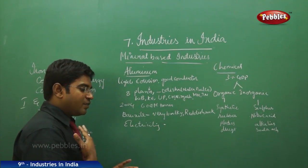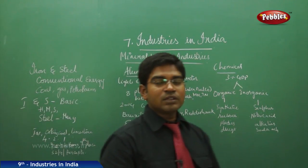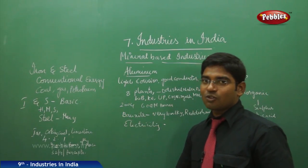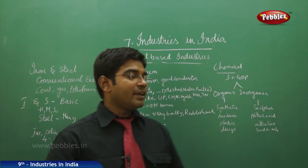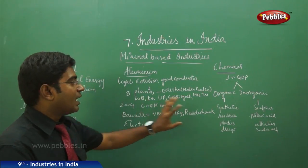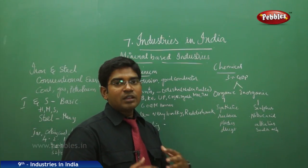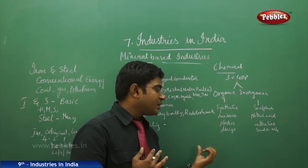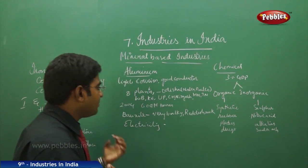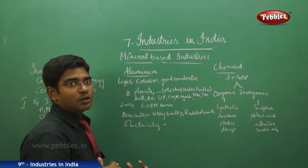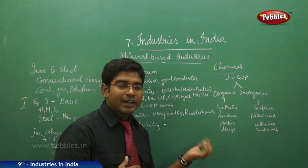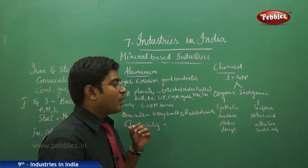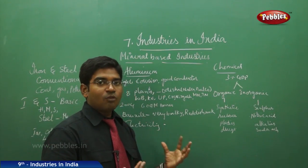Industrial growth is very much required for a country like India, where basic industries are essential. We also need other industrial units like aluminum and chemical industries, where large numbers of people can be employed and the availability of raw materials makes a location accessible and helps an industry flourish.